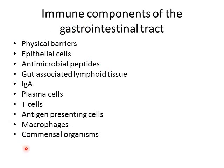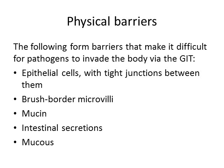These are the individual components of the GIT that we're going to discuss in this lecture. In terms of physical barriers, this is a basic first line of defense. Our intestinal epithelial cells have very tight junctions between them to make it difficult for pathogens to invade the underlying tissue. Brush border microvilli also form a physical barrier. Mucin is secreted, forming a mucus layer that coats all the intestinal cells and prevents direct contact between bacteria and epithelial cells.